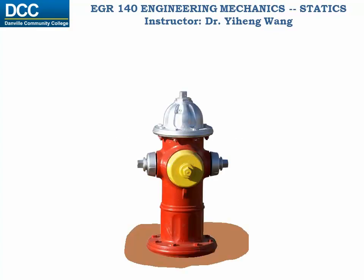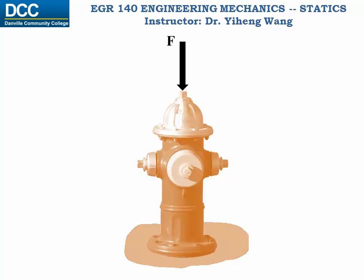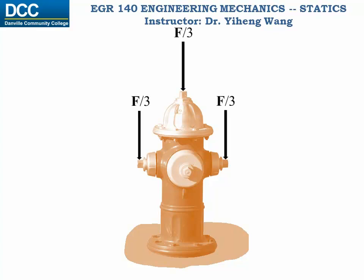Imagine this fire hydrant fixed to the ground, and there's a force F acting on it as shown. From experience, we can tell that if we replace this force by two forces, each with half the magnitude placed symmetrically about the central axis of the hydrant, these two forces will create the same effect as the original F force. Even replacing them with three forces creates the same effect. By same effect, I mean the forces create the same tendency to push the fire hydrant down, and the ground will generate the same force to support it. These several force systems are known to be equivalent systems.